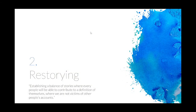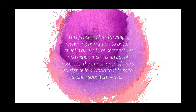But what happens when readers don't have access to or don't read stories that they identify with? Well, one form of resistance to that is restorying. Another Nigerian author, Chinua Achebe, explains that one option for those who have been dispossessed or silenced is to re-story themselves in order to establish a balance of stories where every people will be able to contribute to a definition of themselves, where we are not victims of other people's accounts. Thomas and Storniolo say this process of re-storying — of reshaping narratives to better reflect a diversity of perspectives and experiences — is an act of asserting the importance of one's existence in a world that tries to silence the subaltern voice.